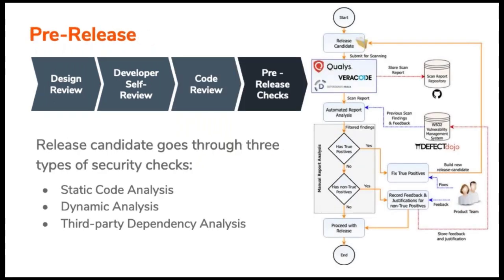Once multiple features are put together, there's a release. However, before proceeding with a release, there are some pre-release checks that must happen. These include static code analysis, dynamic analysis, and third party dependency analysis. If any of these checks uncover a security issue, or if these checks are not done properly, the release cannot proceed and the product team will have to fix the relevant problems and then do another release candidate.